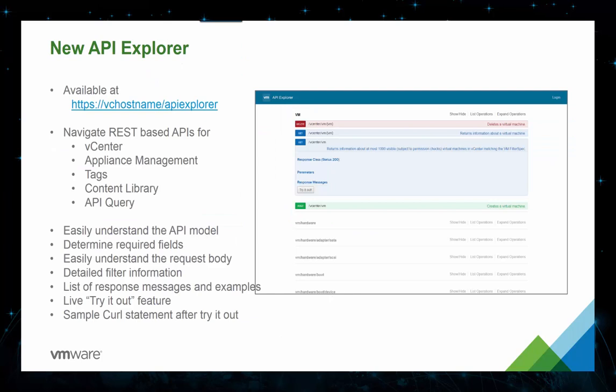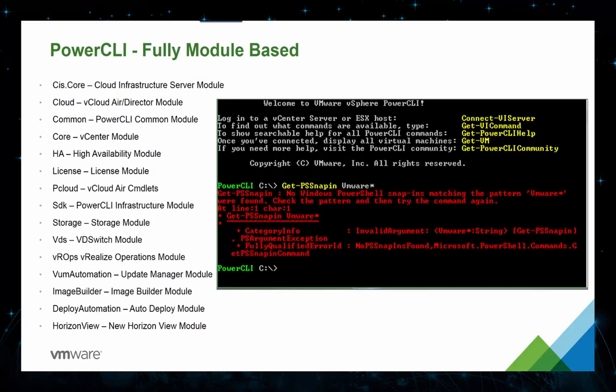We've also included a new API Explorer, which helps navigate REST-based APIs for vCenter, appliance management, tags, content library, and API query. It makes determining required fields much easier, gives detailed filter information, a live try-out feature, and several other new capabilities. For those that prefer scripting, the new PowerCLI command line tool is fully module-based, allowing you to automate almost all daily operational tasks using scripting. It also supports output in the following formats: simple, table, JSON, XML, and HTML.